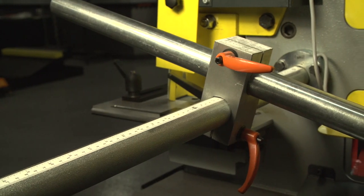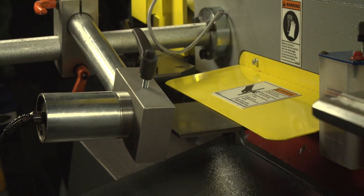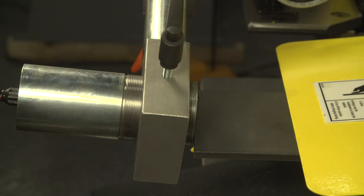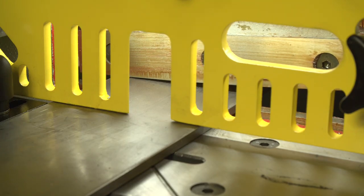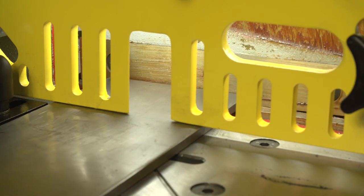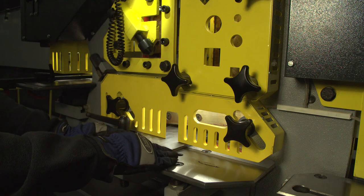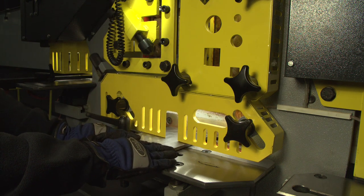Each iron worker comes standard with a 40 inch electrical back gauge. This electrical back gauge allows for the operator to cut multiple same length parts without having to use the foot pedal. Each time the material hits the back gauge it actuates the machine. The electrical back gauge comes standard with the iron worker.